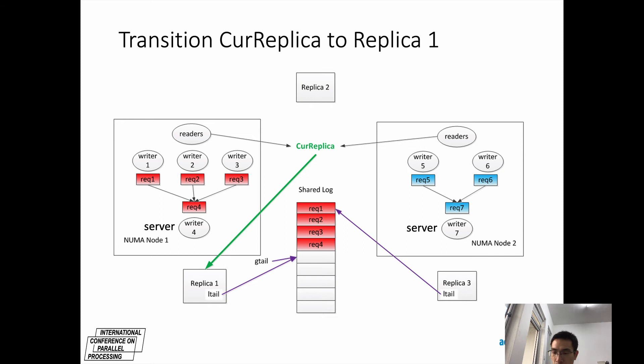Because replica 1 now is the most recent replica, the server transitions CR-replica from replica 2 to replica 1, so as to make readers access the up-to-date one. Therefore, now replica 1 is for read-only access, and replica 2 is available for exclusive access.